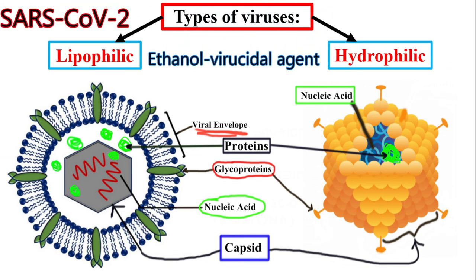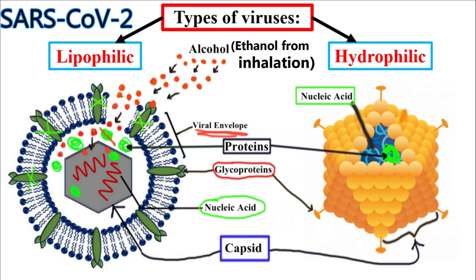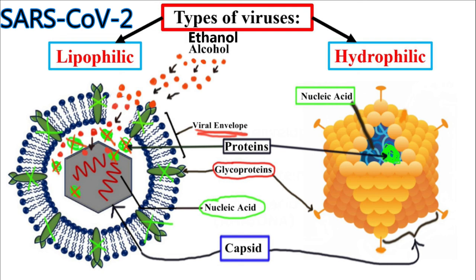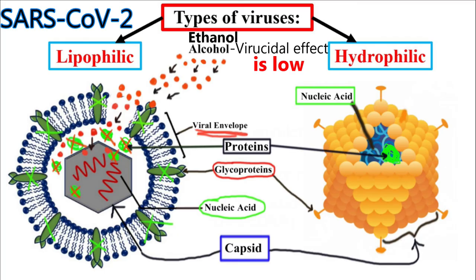SARS-CoV-2 is a lipophilic virus, meaning it has a lipid envelope. When alcohol molecules bind with the fat membrane encasing the virus, the membrane is broken down and the inside of the virus particle — including critical components like proteins — becomes exposed to alcohol, which will denature proteins and is deadly for the virus. However, since the concentration of ethanol in inhalation is pretty low, the virucidal effect is also low. For more details, watch the video about alcohols used as antiseptics and disinfectants. This concludes our lecture. Thank you for watching.